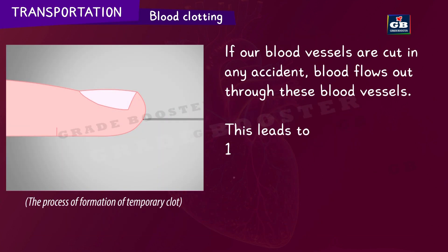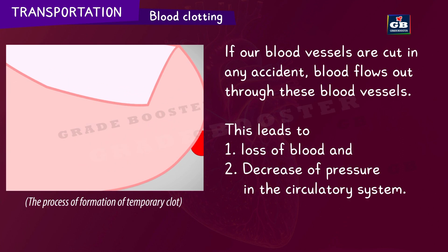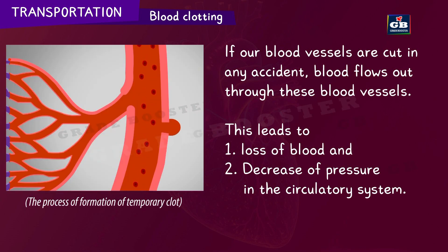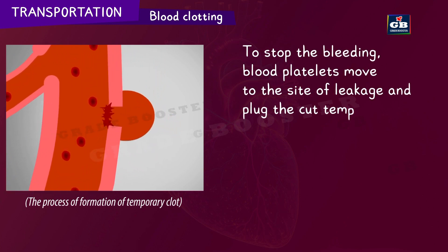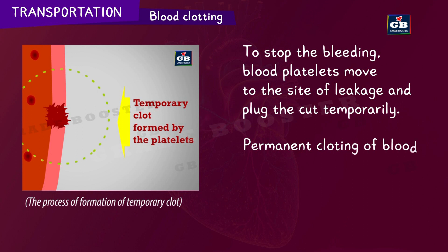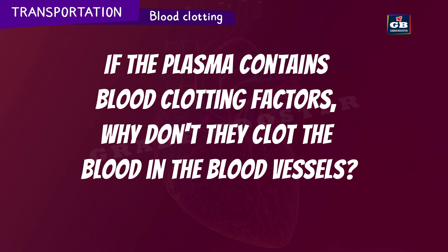Regarding the repair of damaged blood vessels: if blood vessels are cut in an accident, blood flows out, leading to loss of blood and a decrease of pressure in the circulatory system. To stop the bleeding, blood platelets move to the site of leakage and plug the cut temporarily. Permanent clotting of blood takes place with the help of various clotting factors present in the plasma. Here is a question: if the plasma contains blood clotting factors, why don't they clot the blood inside the blood vessels? If you know the answer, please write it in the comments.